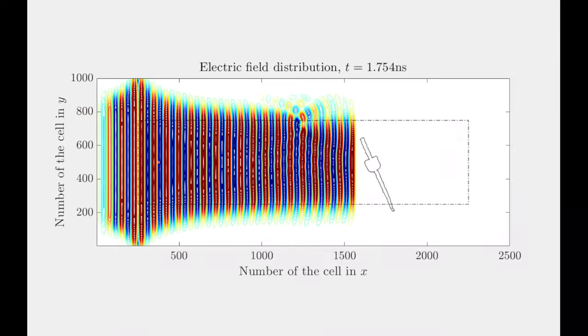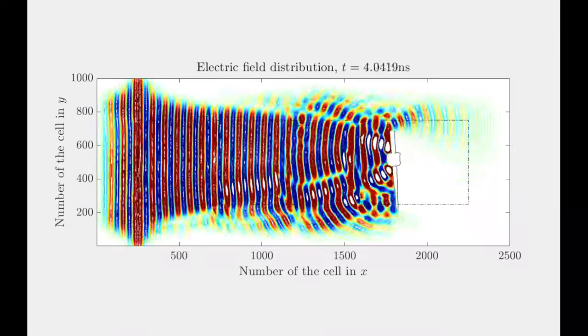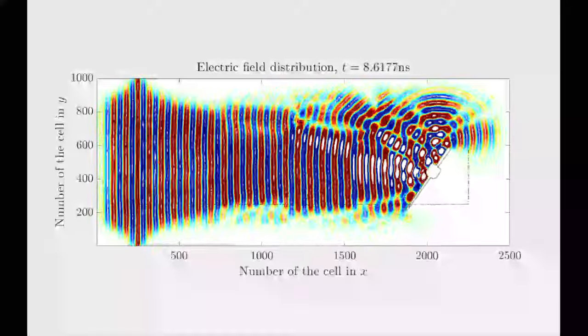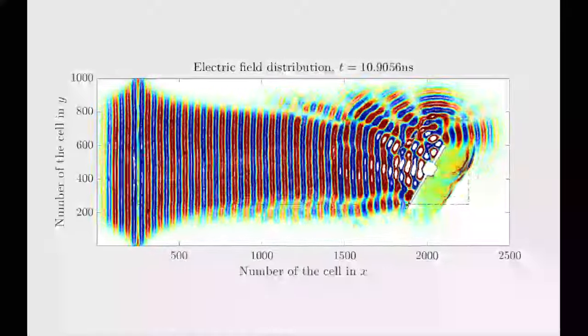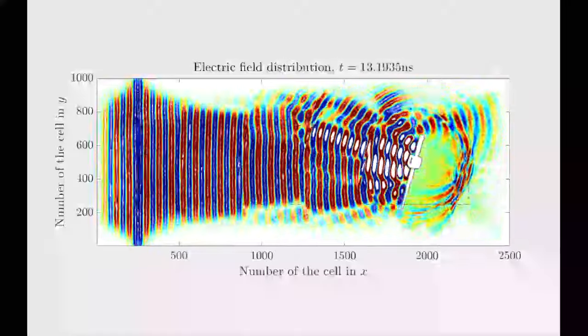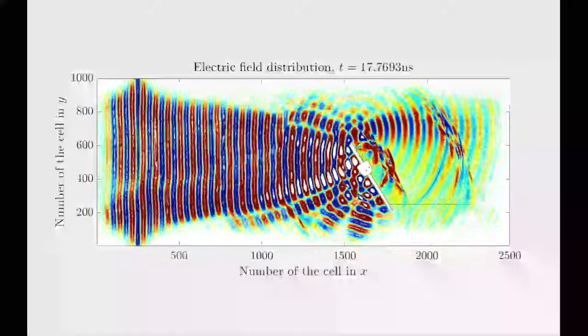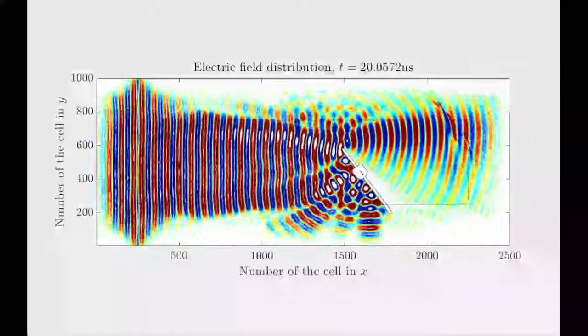In the simulation based on the finite difference time domain method, a plane electromagnetic wave illuminates the target in motion which is obtained with the recorded video. As the simulation progresses, the simulated radar signals which mimic the actual signals we captured earlier can be extracted by using mixing, filtering, and time rescaling.